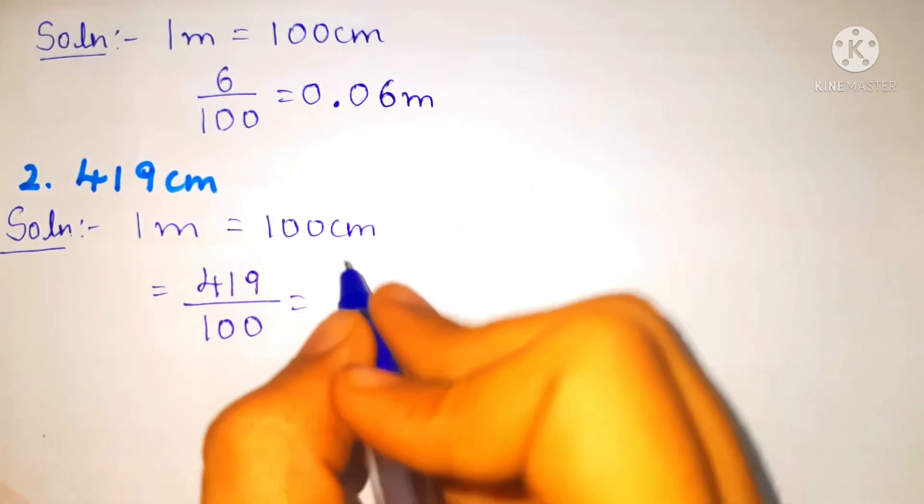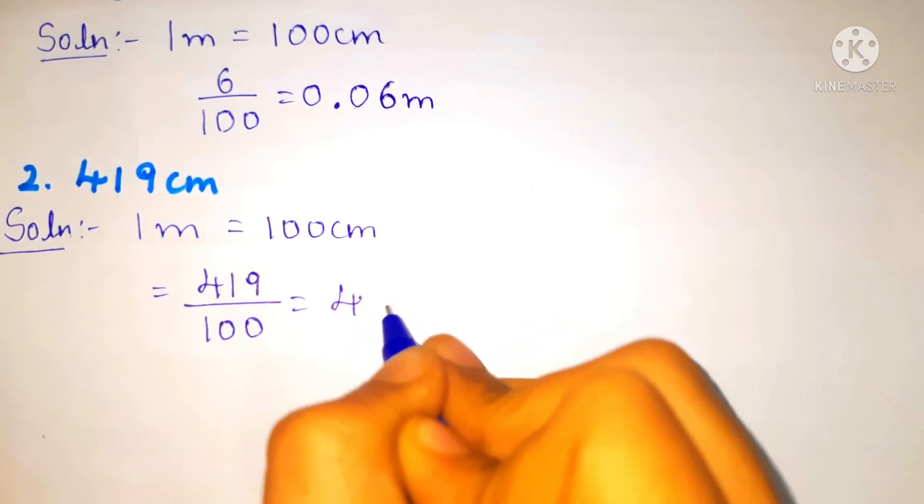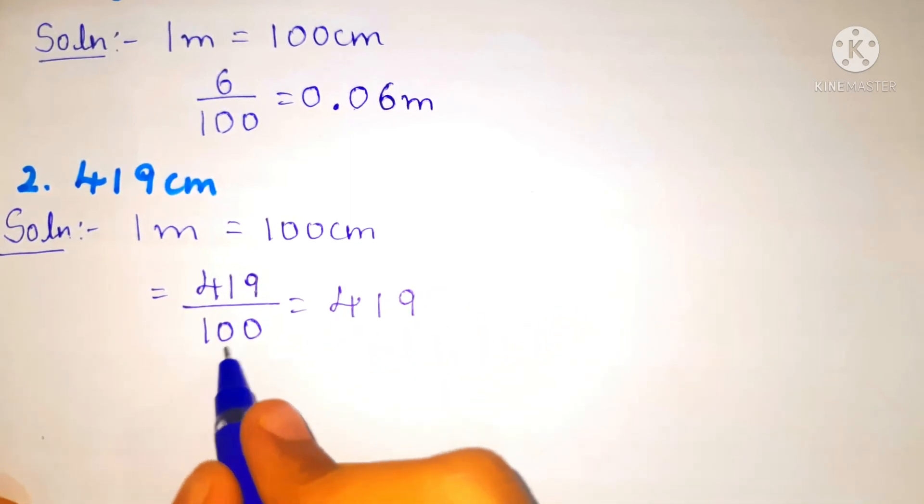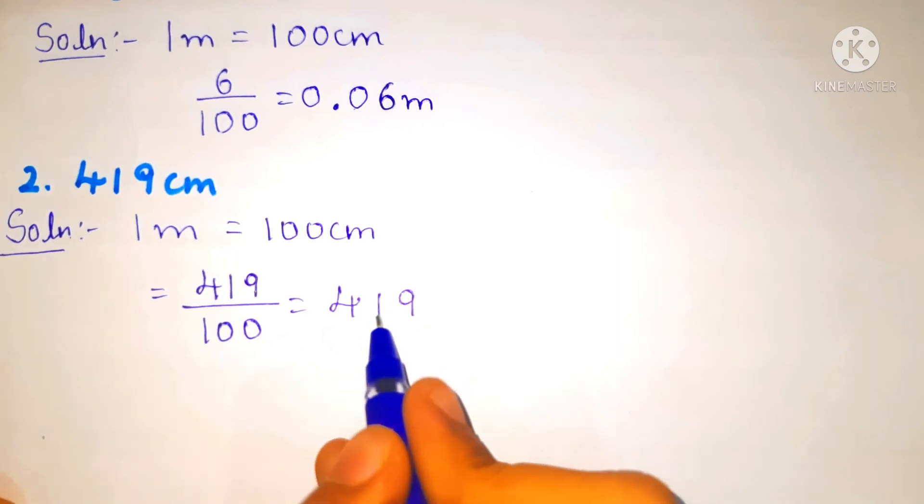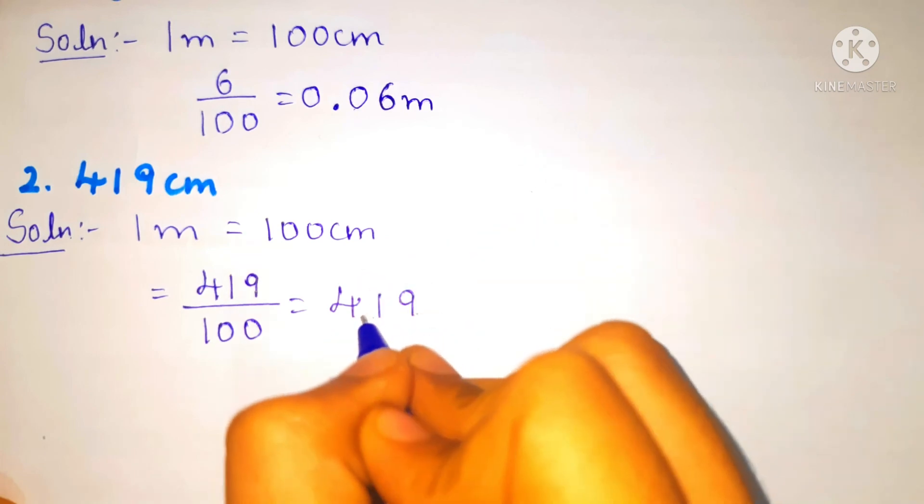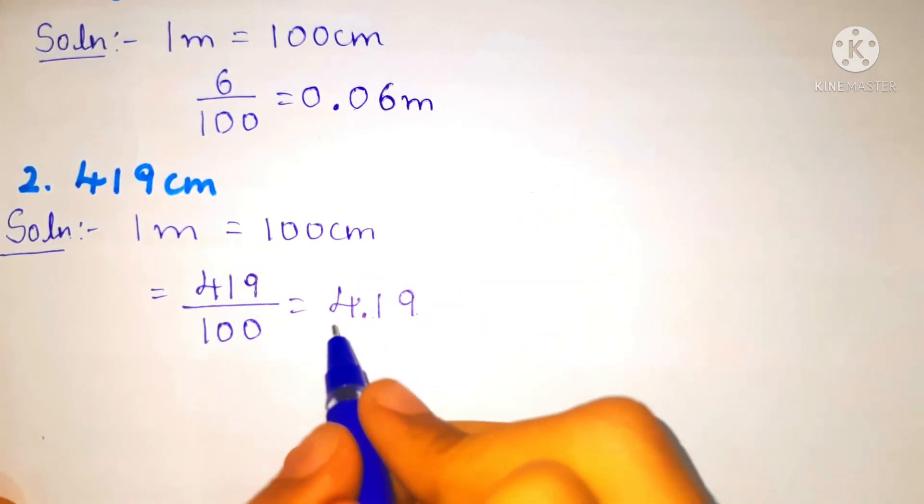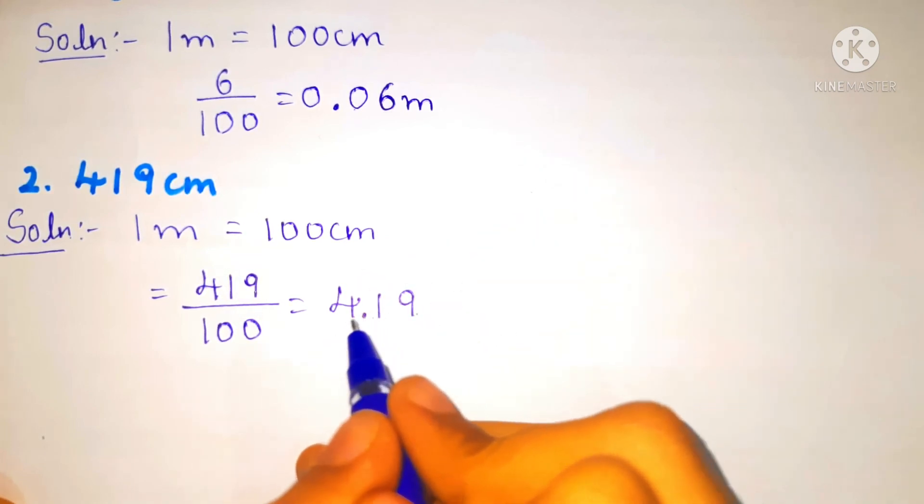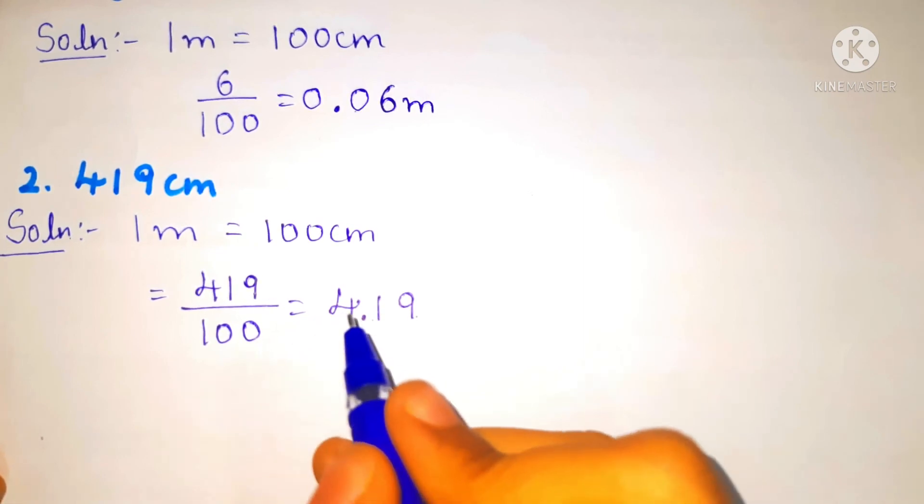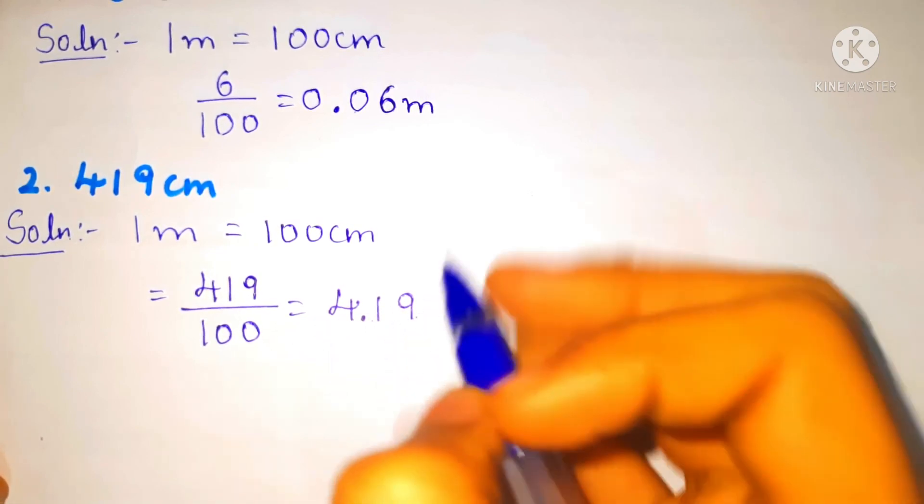We'll write the numerator as it is. And in number 100 we have two zeros. We'll count two digits and put one point. One, two. So after four we have put the point, so it will become 419 centimeter is equal to 4.19 meter.